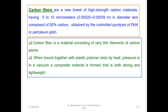What are carbon fibers? Carbon fibers are a new breed of very high strength carbon materials, which have a diameter of about 5 to 10 micrometers and contain about 92% carbon. They are obtained by controlled pyrolysis of polyacrylonitrile (PAN) polymer fibers or petroleum pitch. This carbon fiber material consists of very thin filaments of carbon atoms.